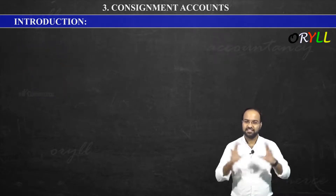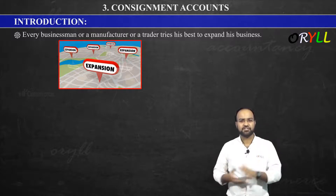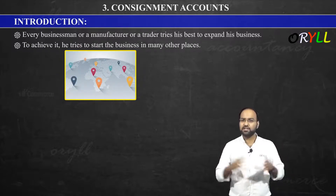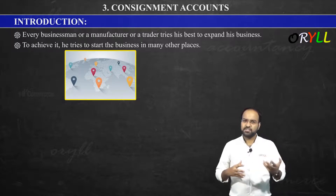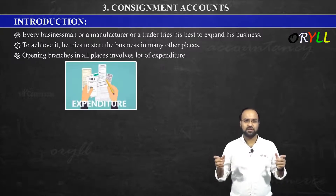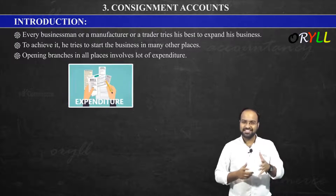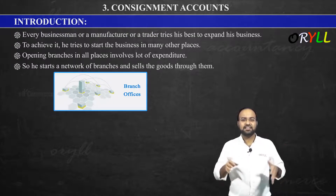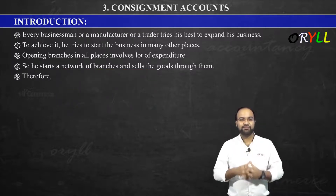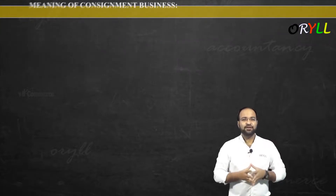Now let us see the points one by one. Every businessman, manufacturer, or trader tries their best to expand their business. To achieve it, they try to start the business in many other places. Opening branches in all places involves lots of expenditure, as we discussed with the Hyundai example. So, he starts a network of agents and sells the goods through them. Therefore, he appoints agents at other places and through them sells the goods on a commission basis.